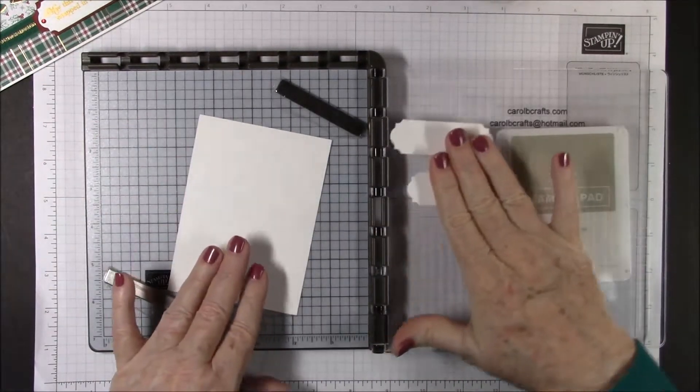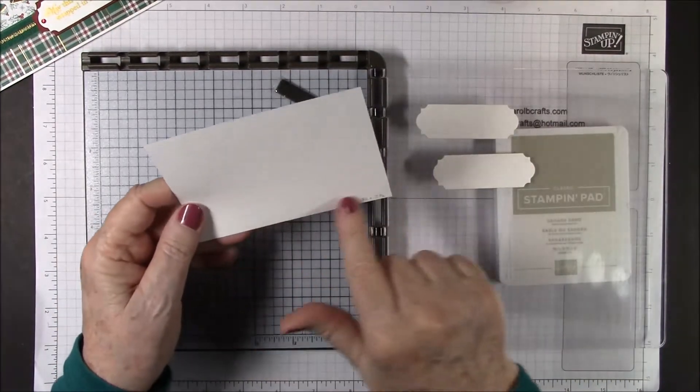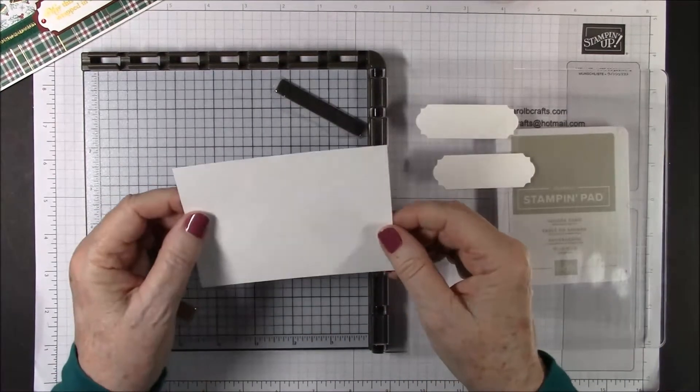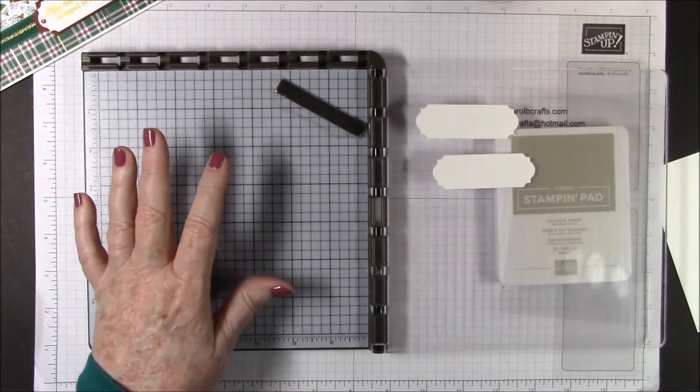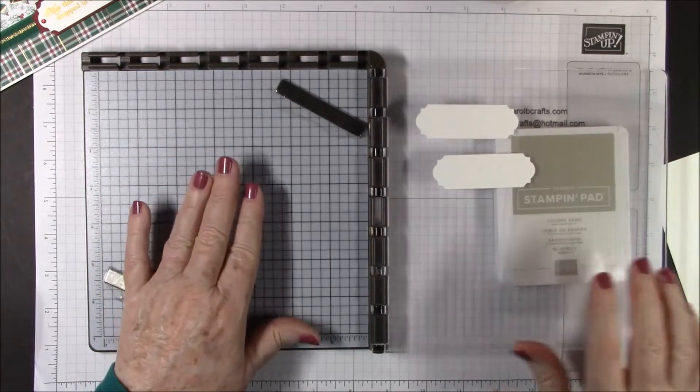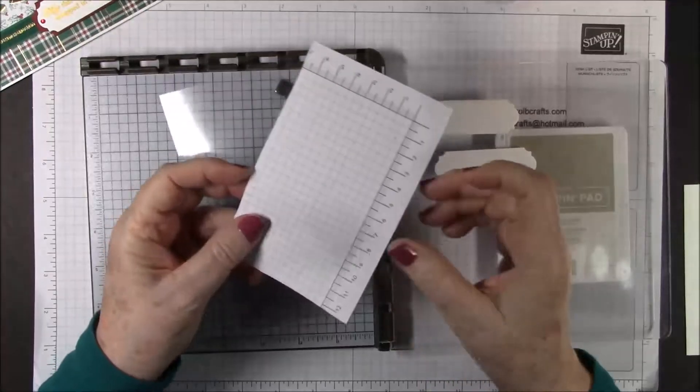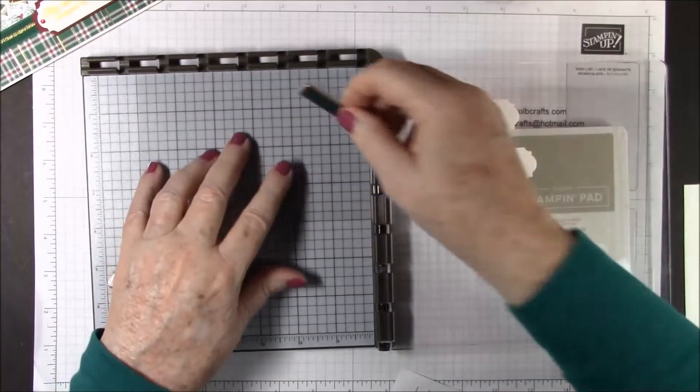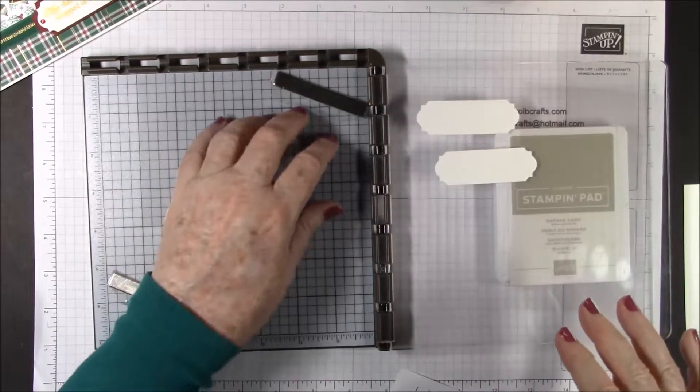We'll be stamping on that for our front, and then on the inside sentiment we have four and three quarters by three and a half whisper white. You'll also need your four by six plastic sheet and a piece of scratch paper.